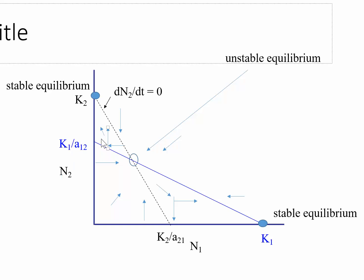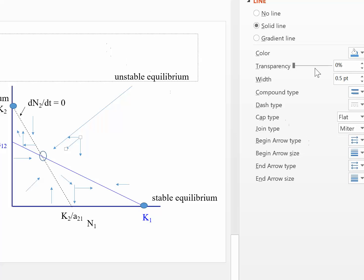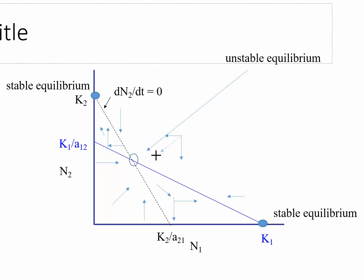This shows us the potential trajectories of the population and how it would grow. If you're down in the lower left corner where both populations are very small — near zero individuals of each species — both populations would grow, giving an increasing population of species one and species two. Similarly, if you are above both lines, you'd have a decreasing growth rate of both populations, resulting in a trajectory that moves toward lower abundances for both species.